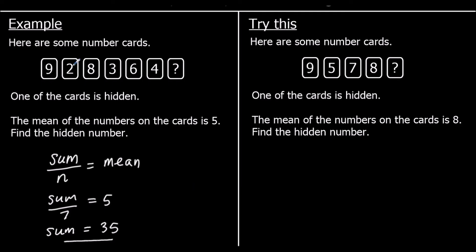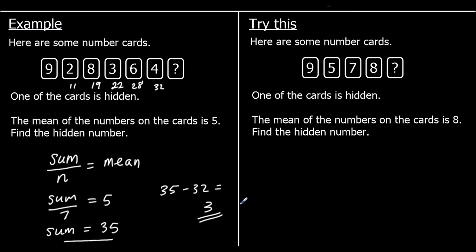So what's the missing number? Nine and two make eleven, plus eight is nineteen, add three is twenty-two, add six is twenty-eight, add four is thirty-two. We have thirty-two so far and we need thirty-five, so the missing number must be three. This card must be a three for the mean to be five.